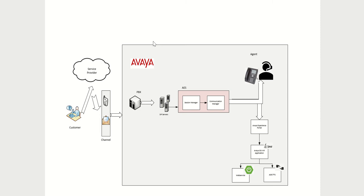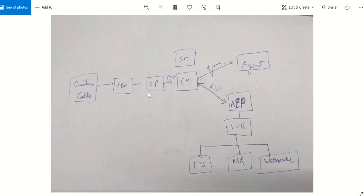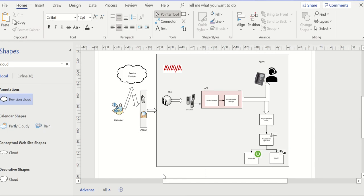Hi guys, today's video is about Avaya or any telecom architecture — how the call goes from the customer side to the particular agent or the IVR journey. We are talking about Avaya systems and the components which have been used. If you want to see how I came up with this architecture diagram, there is another separate video for that. Please see the details in the link.